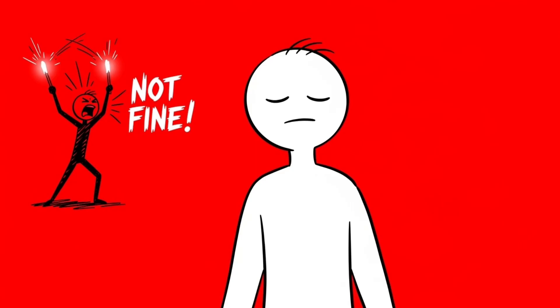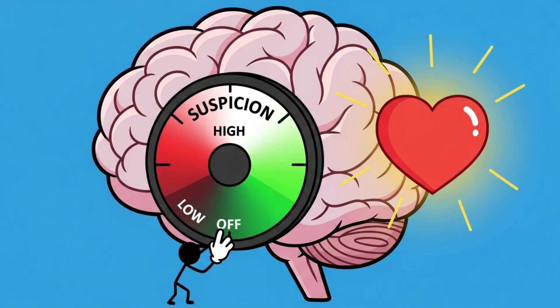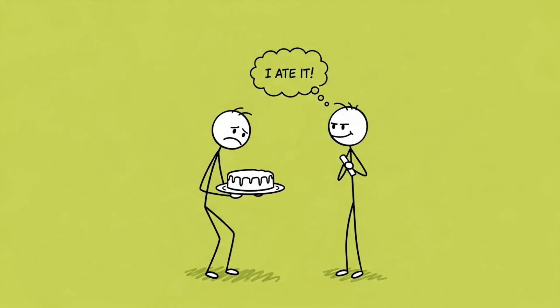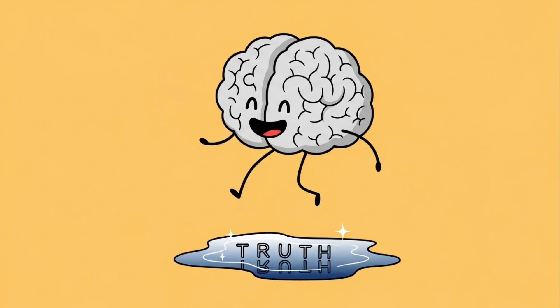Meanwhile, your subconscious is waving flares in the background yelling, it's not fine, it's so not fine. This emotional override explains why people often ignore obvious lies in relationships, friendships, or even with family. The brain literally turns down the suspicion dial to keep the emotional peace. It's a feature, not a bug, one designed to keep the tribe together even if it means you occasionally get lied to about who finished the last slice of cake. So yeah, your heart might skip a beat, but your brain skips the truth.